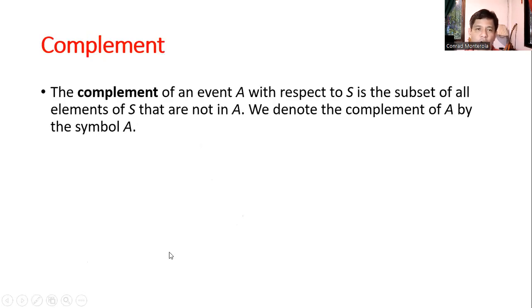Complement. So the complement of an event with respect to S is the subset of all elements of S that are not in A. So we denote the complement of A by the symbol A prime. Sorry for this. This is supposed to be A prime. You can check. So, complement of A, A prime.